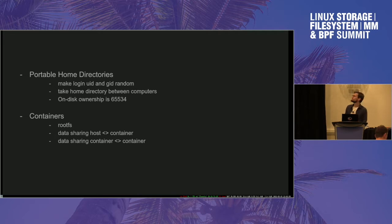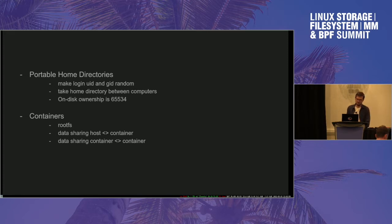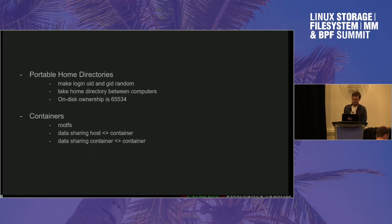Here are a couple of use cases. First, a non-container use case — because I always like to stress that this is not just purely a container feature, it's a generic VFS feature. This is about portable home directories: the UIDs and GIDs that you put on disk. If you have a BtrFS sub-volume as your home directory, or a USB stick, or some external disk with XFS or an EXT4 filesystem, and you want to take this home directory between two different machines, you can have different login UIDs and GIDs assigned, and then you wouldn't be able to interact with all of the files on disk.